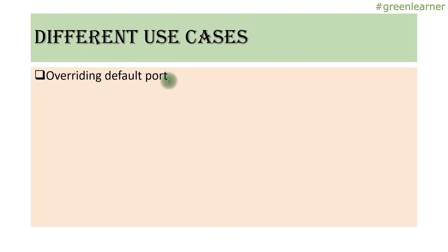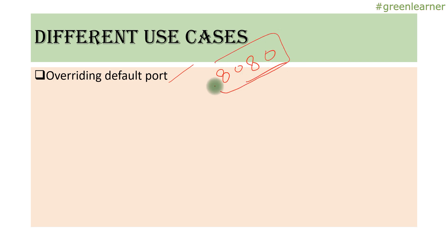First: overriding the default port. When you create a Hello World Spring Boot application and start it, by default it runs on port 8080. If this port is available and no other service or process is running on 8080, your application is going to start on this port.